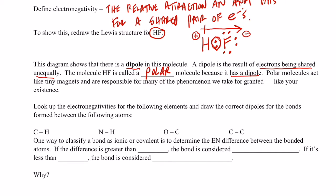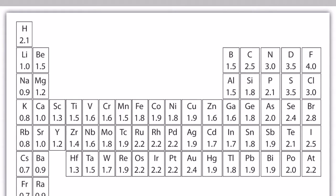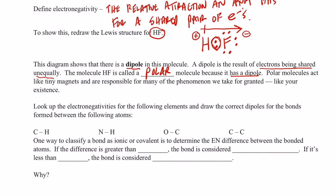So let's look up the electronegativities for the following elements and draw the correct dipoles for the bonds formed between the following atoms. I'll do the first two for you, and you can look at the second. So C and H. So let's look up the electronegativity in our notes, and I have a different diagram here for our lecture, for carbon and hydrogen. It looks like carbon's is 2.5, hydrogen's is 2.1.